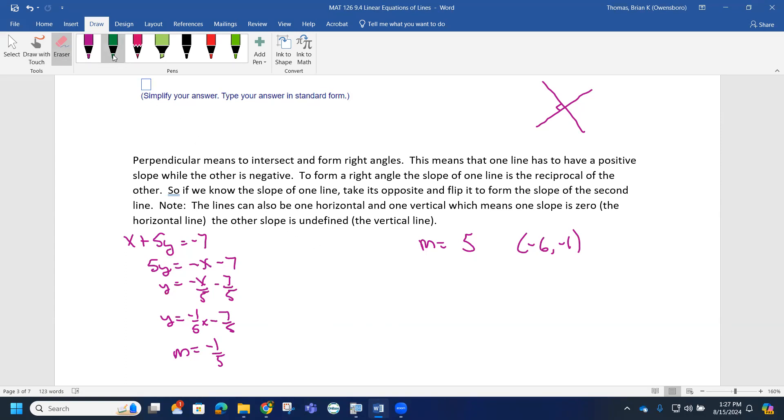You can use the point slope form y minus a negative 1 equals 5 times x minus a negative 6. So y plus 1 equals 5 times x plus 6. So we have y plus 1, 5x plus 30. So y equals 5x plus 29. Can you see where I got that 29?